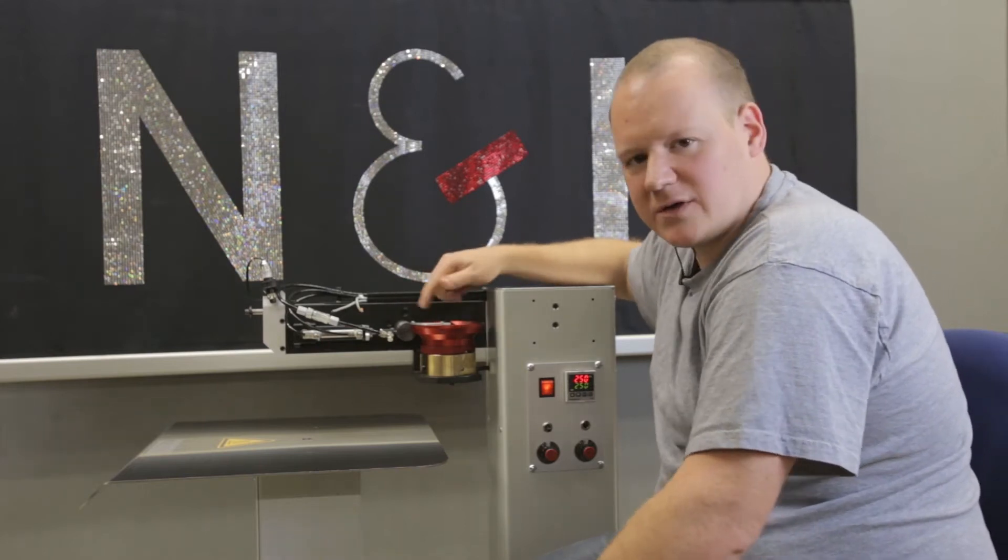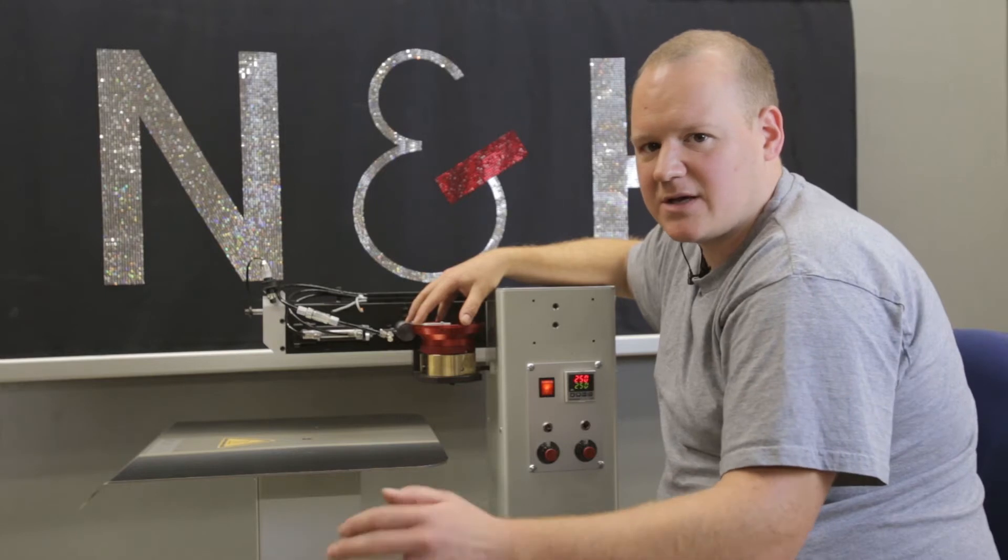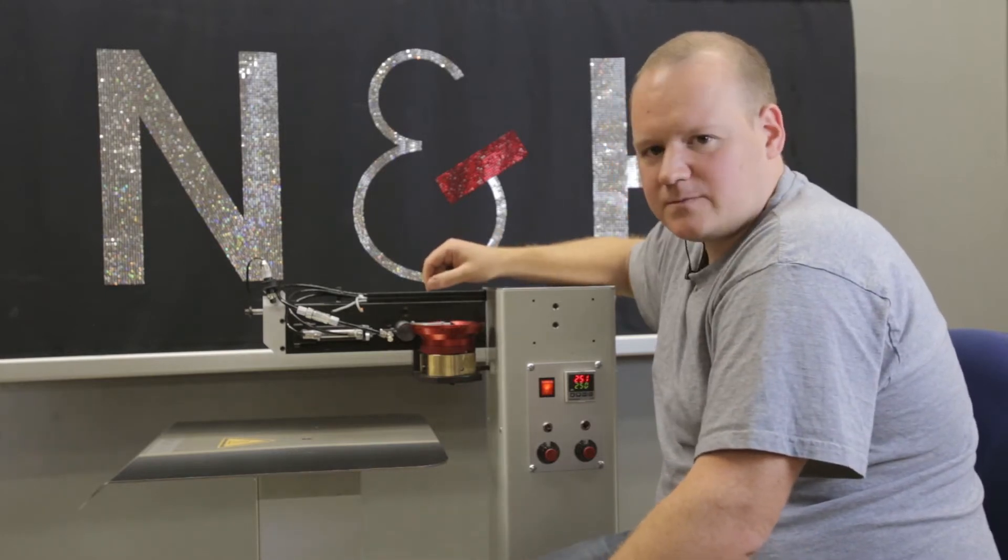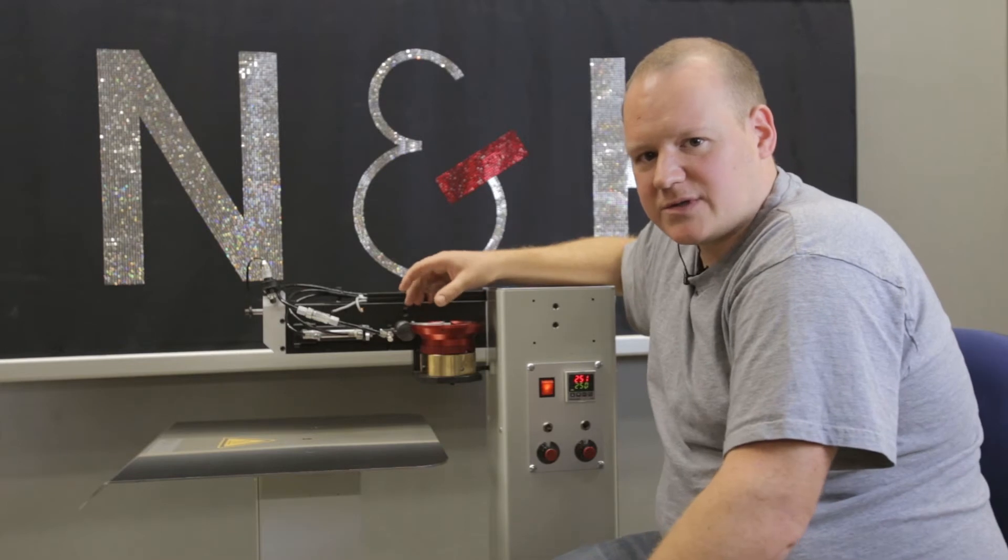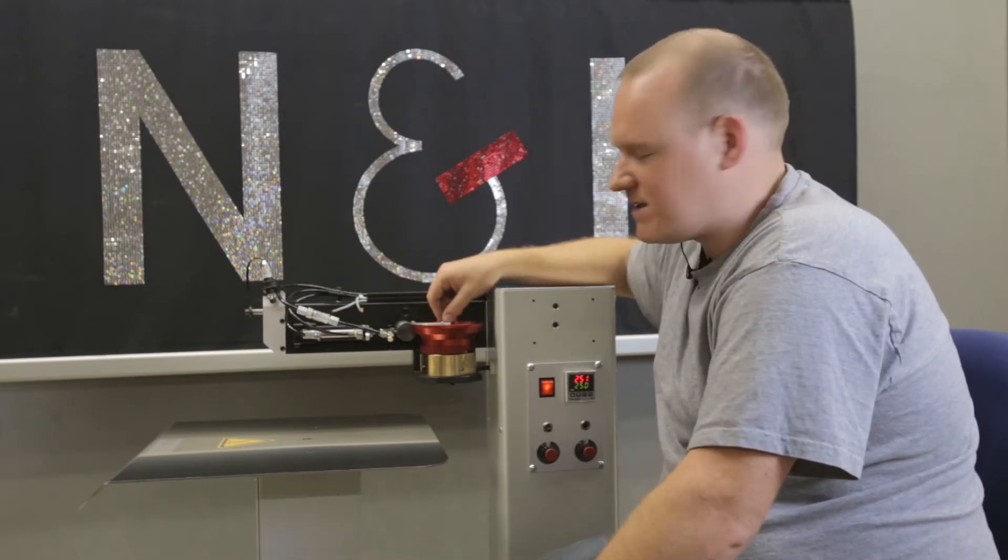But we also have other pots, for example, for SS6 or SS30 stones with extra borders. But for more information, just contact our sales team.